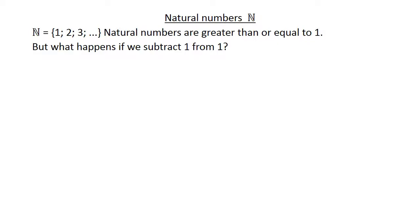Natural numbers. Natural numbers are greater than or equal to 1. But what happens if we subtract 1 from 1? The answer is equal to 0. So we need another set of numbers which includes 0.